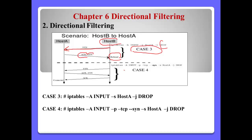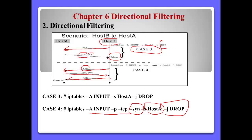Case 4: iptables INPUT, protocol TCP, with the SYN packet, source address Host A, then will be dropped. Host B sends the SYN packet to Host A, and Host A replies with ACK and SYN. Then if Host B sends the ACK packet, this connection will be successful.